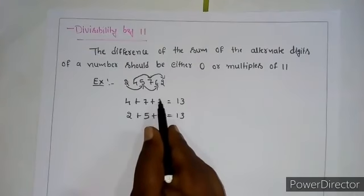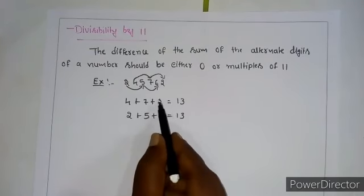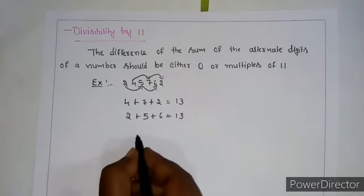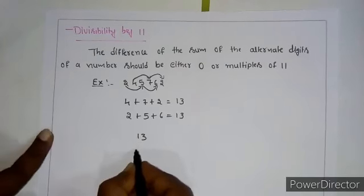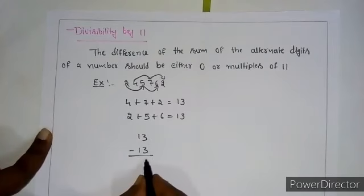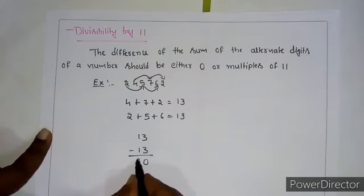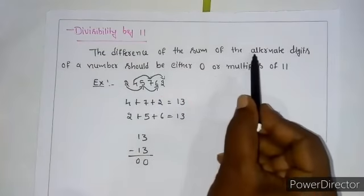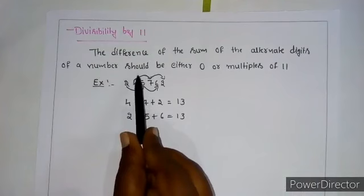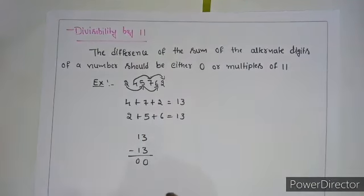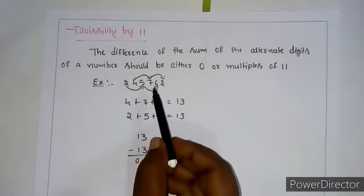The difference between the sums of these two alternate groups: here 13 and here also 13. 13 minus 13 equals 0. We got 0. The difference of the sum of the alternate digits should be either 0 or multiples of 11, so this given number is divisible by 11.